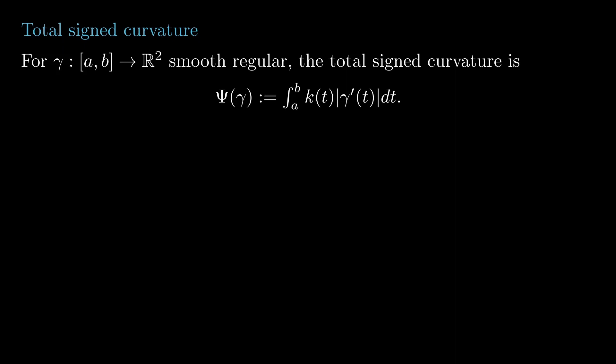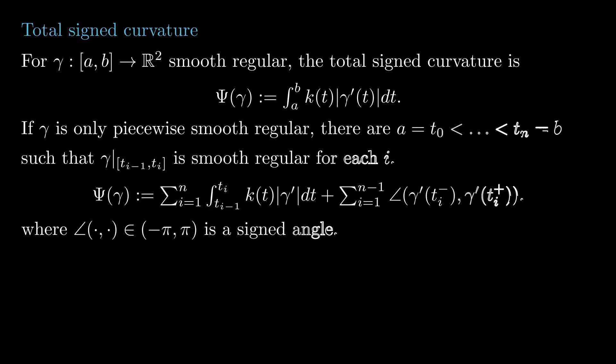We can also define the total signed curvature of a piecewise smooth regular curve as the total signed curvature of the smooth pieces plus the changes of direction at each breakpoint, counted with positive sign if the particle turns left and with negative sign if the particle turns right.